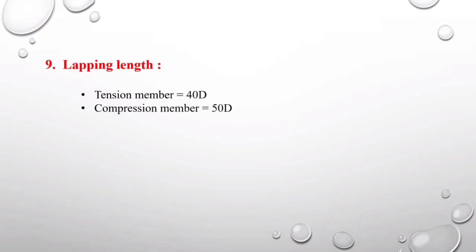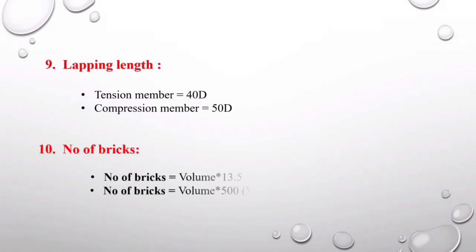Formula nine is about lapping length for columns or beams. For a tension member, the lapping length is 40d, and for a compression member it is 50d, where d is the diameter of the bar.